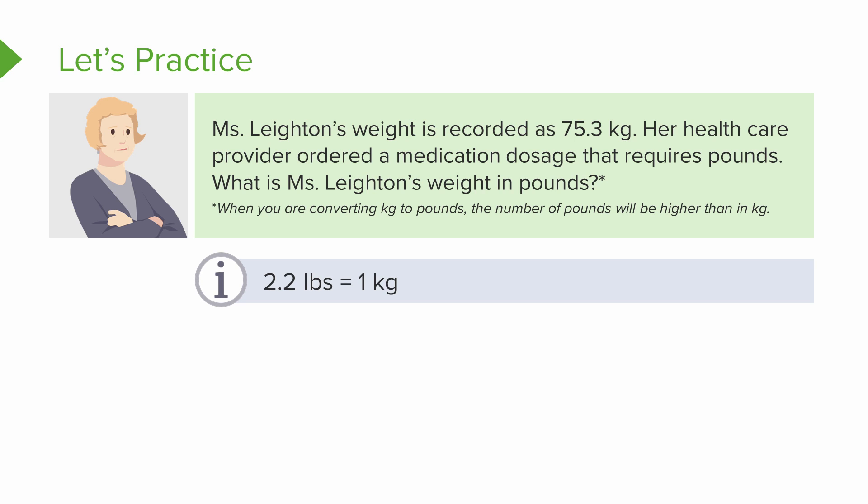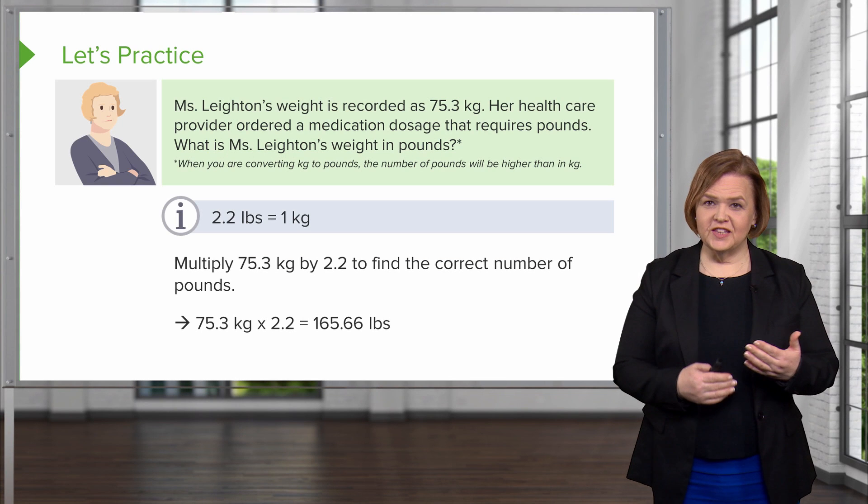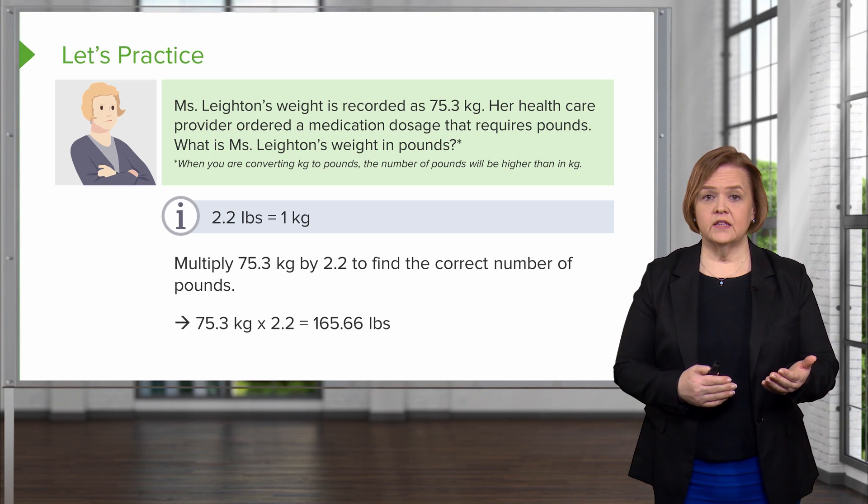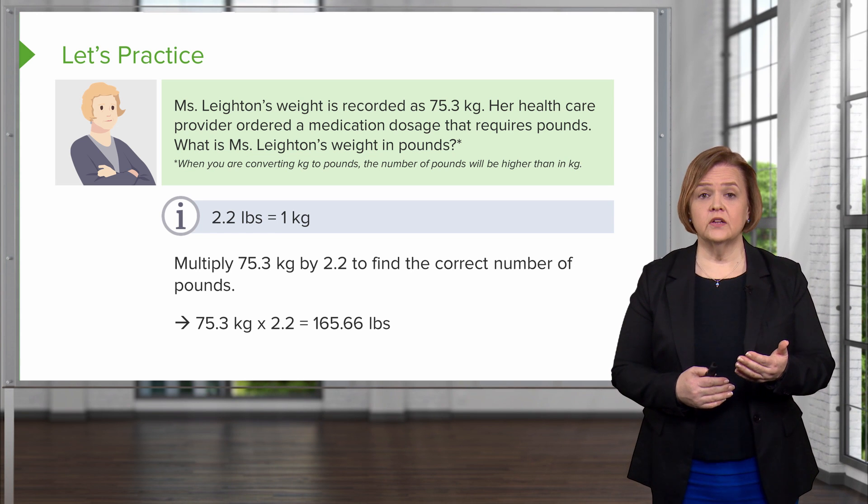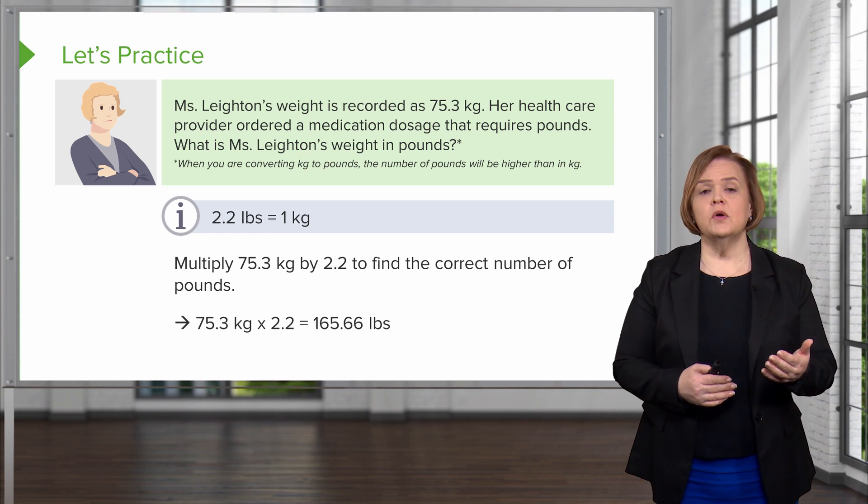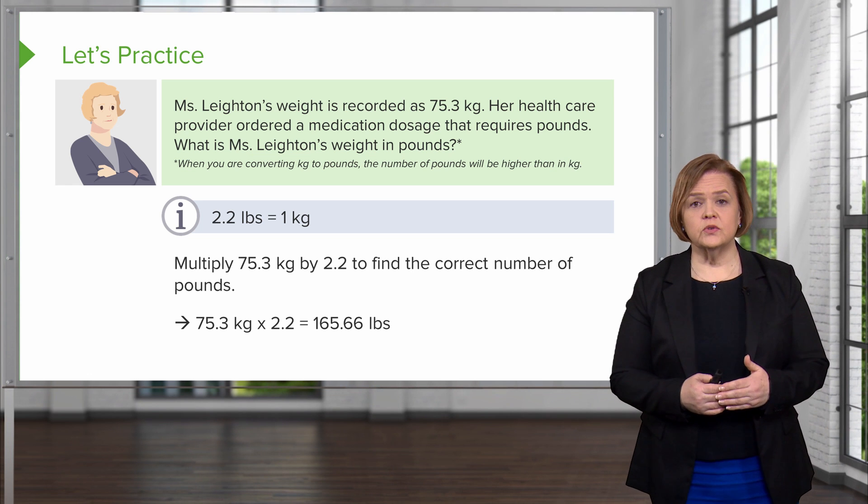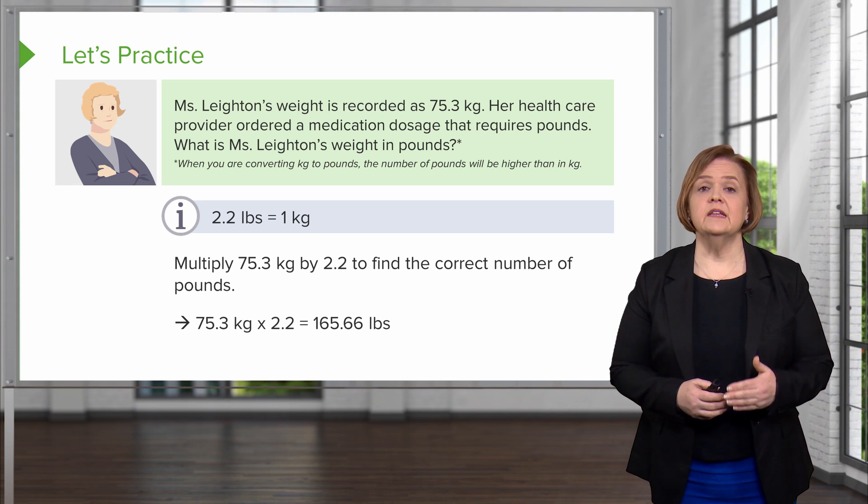So you multiply 75.3 kilograms by 2.2 to find the correct number of pounds. Remember, we expect that number to be bigger. So 75.3 kilograms times 2.2 equals 165.66 pounds. All right, so see how we did that? We went from 75.3 kilograms. We know there's 2.2 kilograms in each pound. So we multiply 75.3 times 2.2 to get Ms. Layton's weight in pounds.